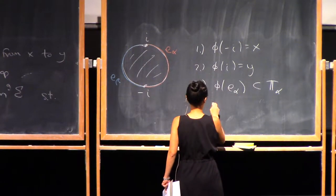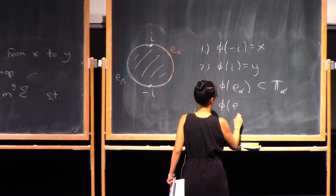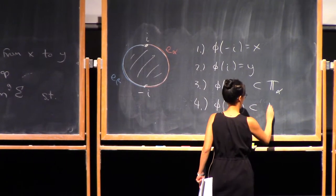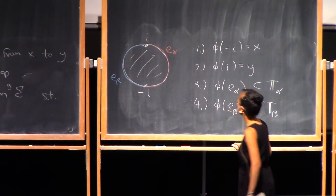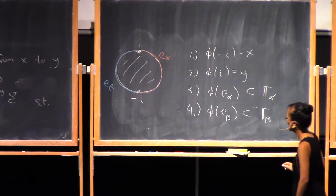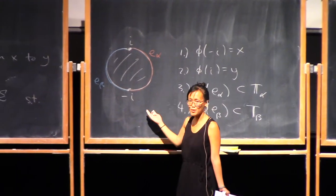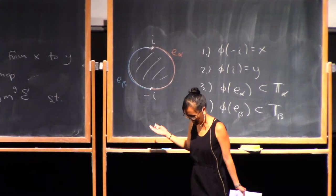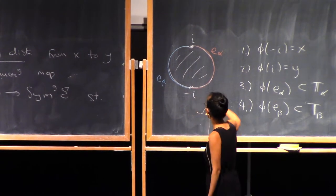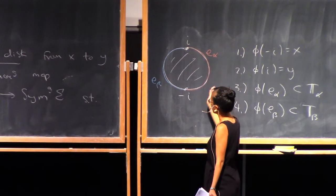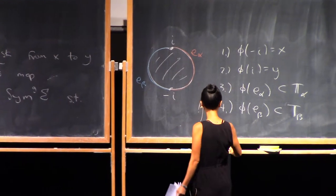Phi of E beta lands in T beta. That's keeping with the convention from yesterday that alphas are red and betas are blue — that's sort of why I labeled E alpha red and E beta blue.